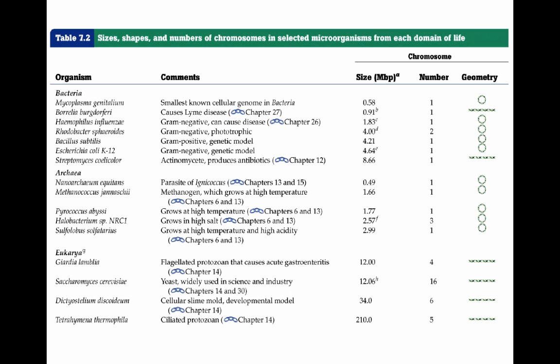This table shows the different kinds of genetic elements you can find in bacteria and eukarya. Organisms that are prokaryotes usually have only one chromosome, though there are a few exceptions with two. Eukaryotic cells tend to have multiple chromosomes, and all of them are always linear.